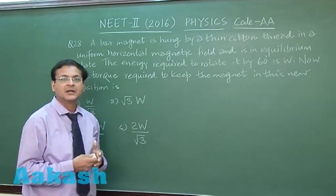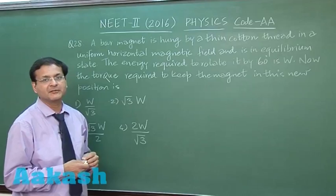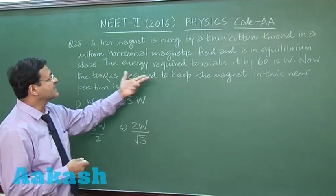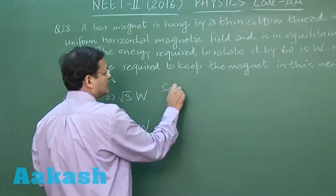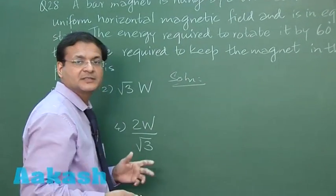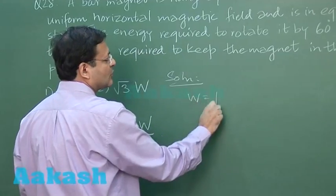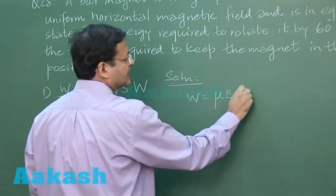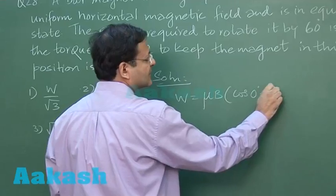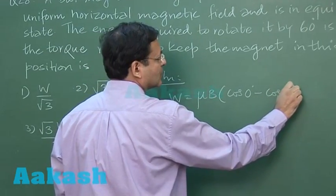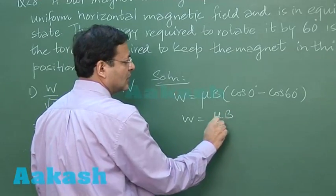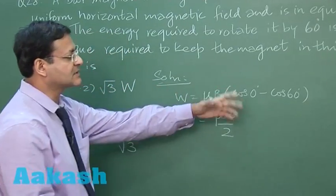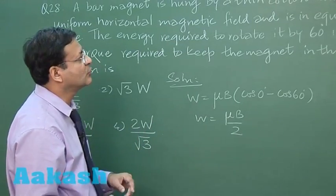That means the angle between dipole moment and magnetic field will be 0 degrees. The energy required to rotate it by 60 degrees is W. The work done expression is μB(cos θ1 - cos θ2). So cos 0 degrees minus cos 60 degrees. W equals μB/2. Cos 0 is 1, cos 60 is half, 1 minus half is half. This is what is given to you.